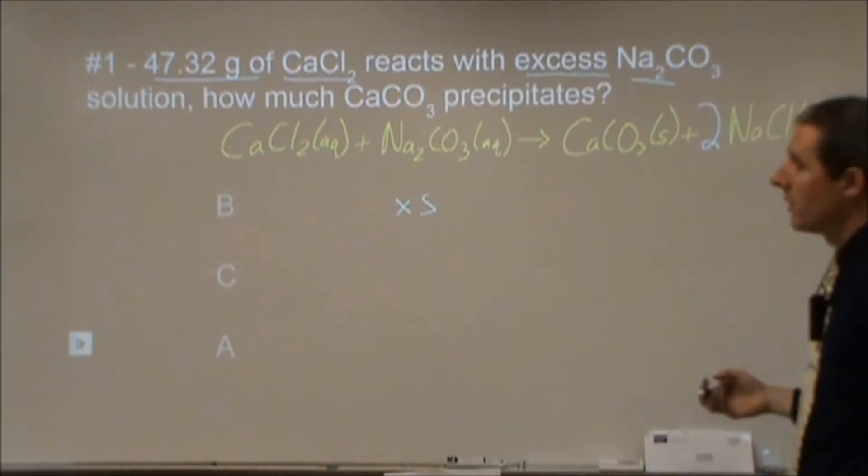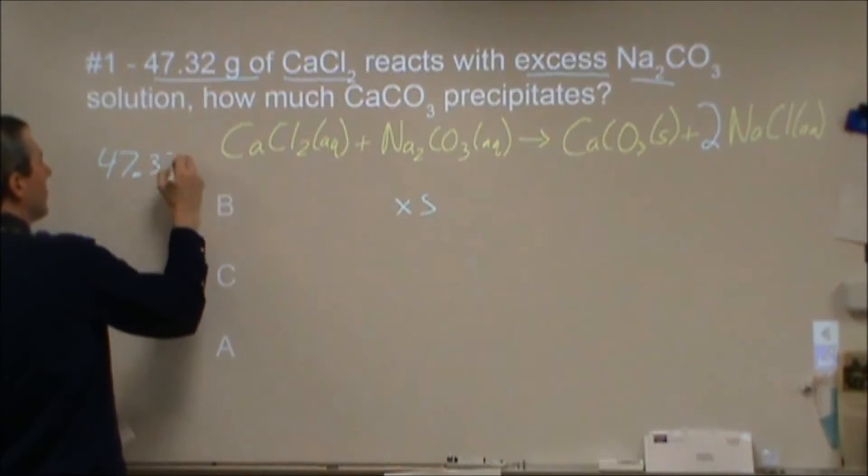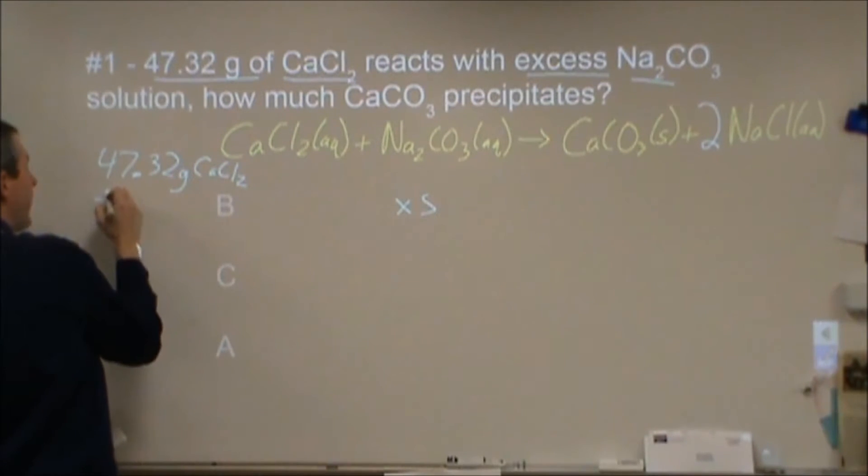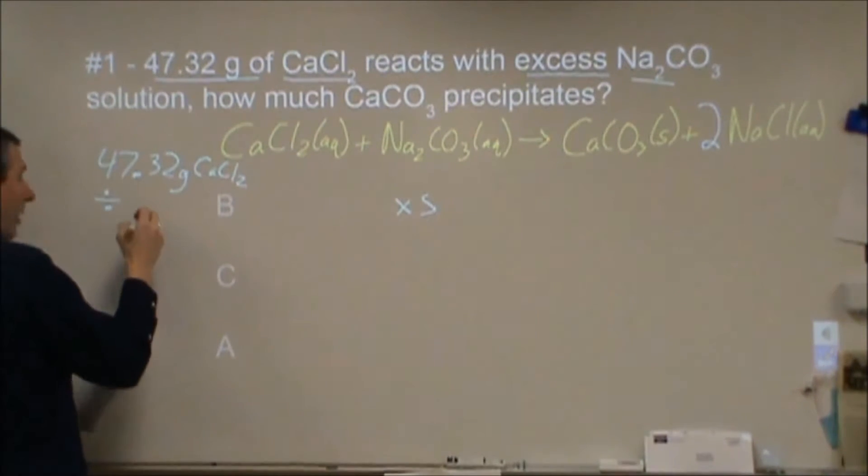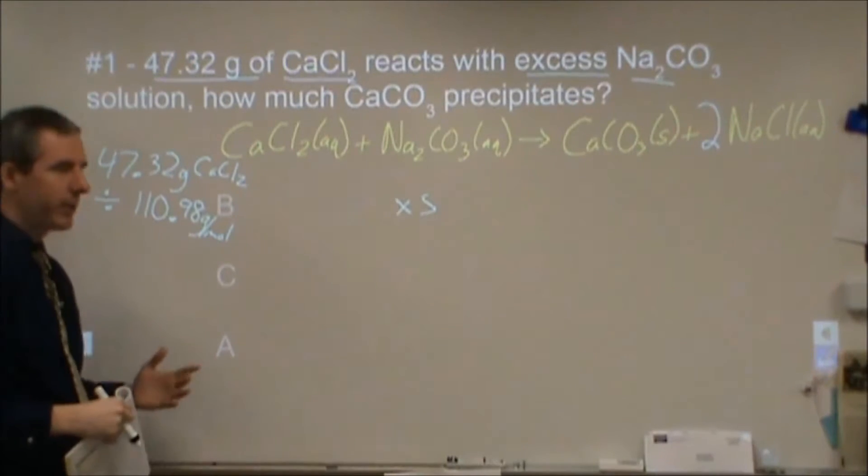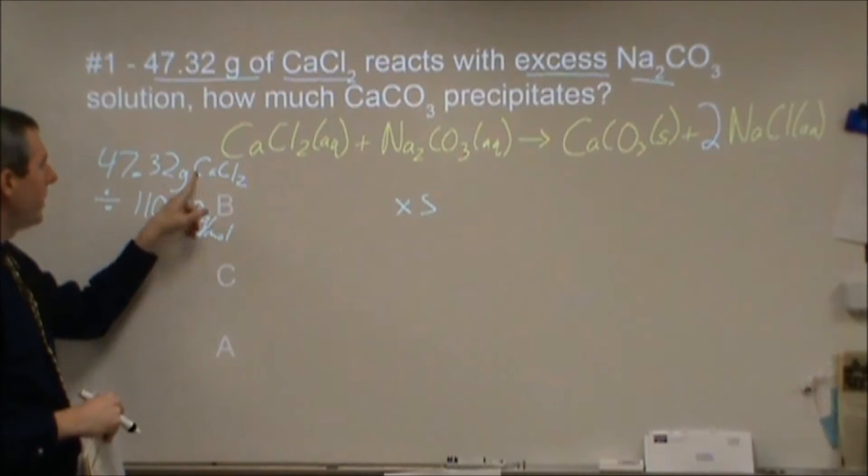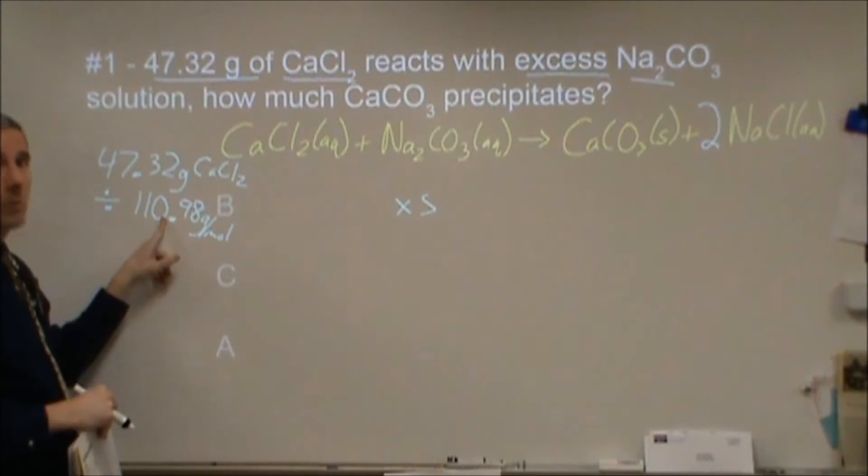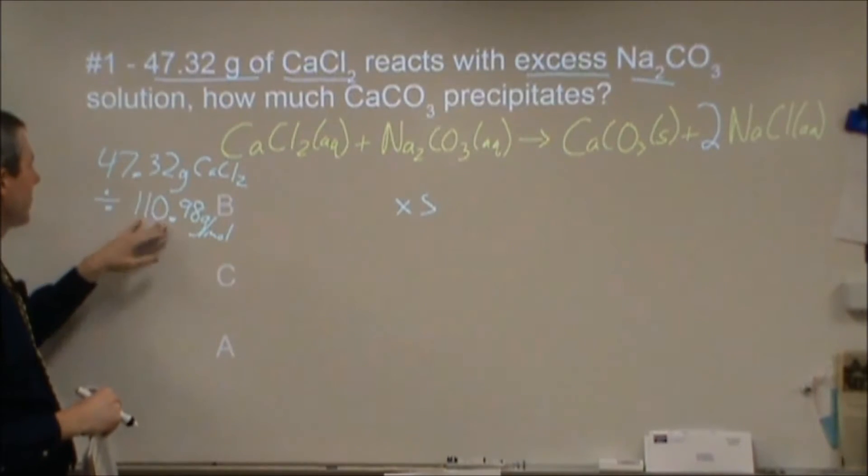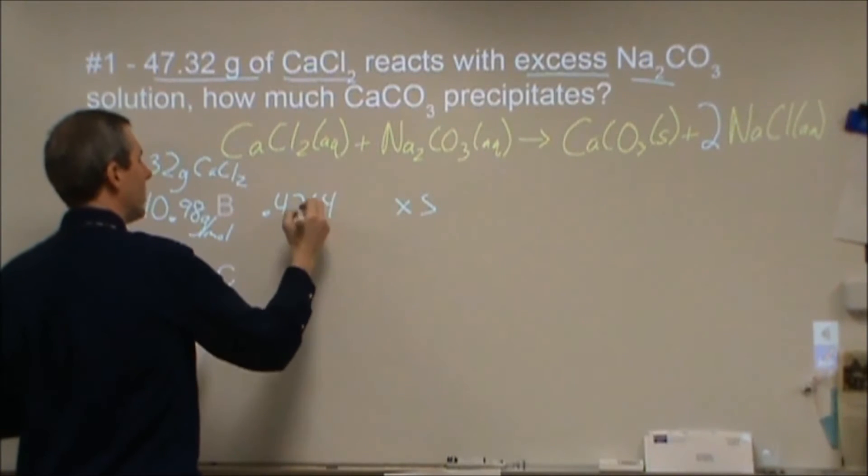We're going to start looking at the amounts. We have 47.32 grams of calcium chloride and excess sodium carbonate. I'm going to put it in excess right now. 47.32 grams, we're going to have to convert into moles to be able to put it into our BCA. So 47.32 grams of calcium chloride, we divide that by its molar mass, which is 110.98 grams per mole.